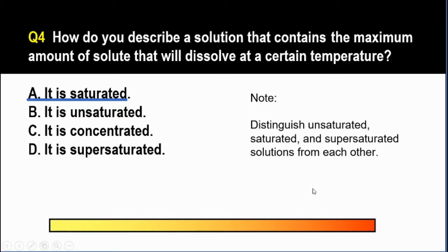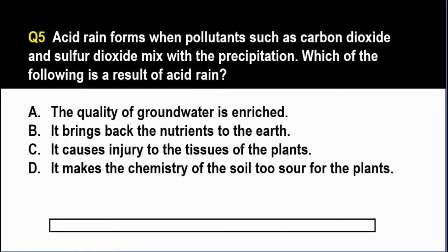So now we are in question number five. And the question is, acid rain forms when pollutants such as carbon dioxide and sulfur dioxide mix with the precipitation, such as rain. Which of the following is an effect of acid rain? A. The quality of groundwater is enriched. B. It brings back the nutrients to the earth. C. It causes injury to the tissues of plants. And D. It makes the chemistry of the soil too sour for the plants.